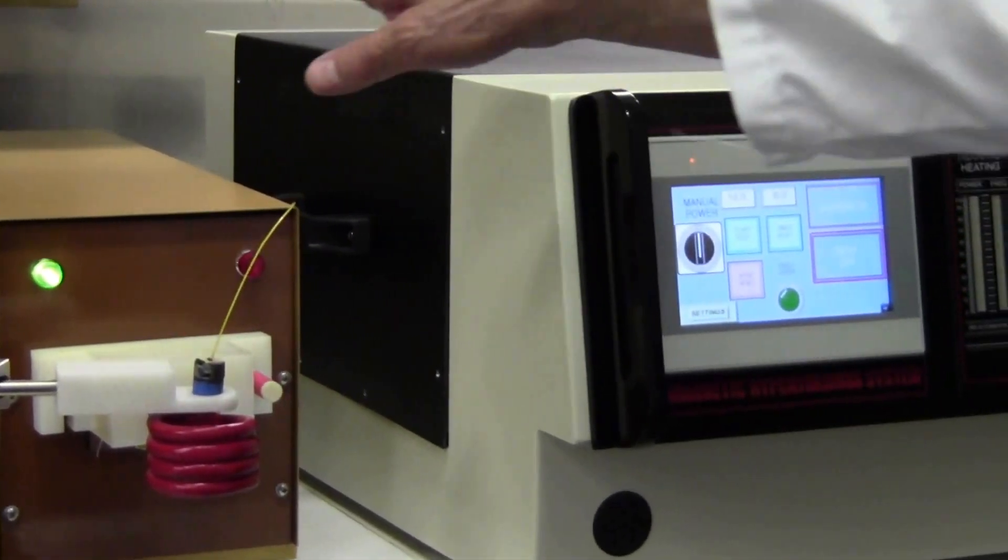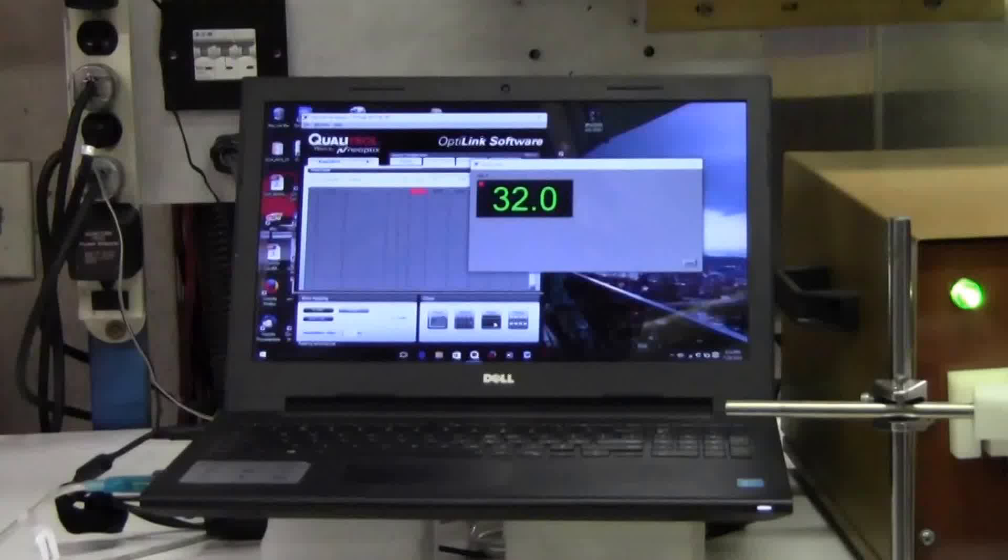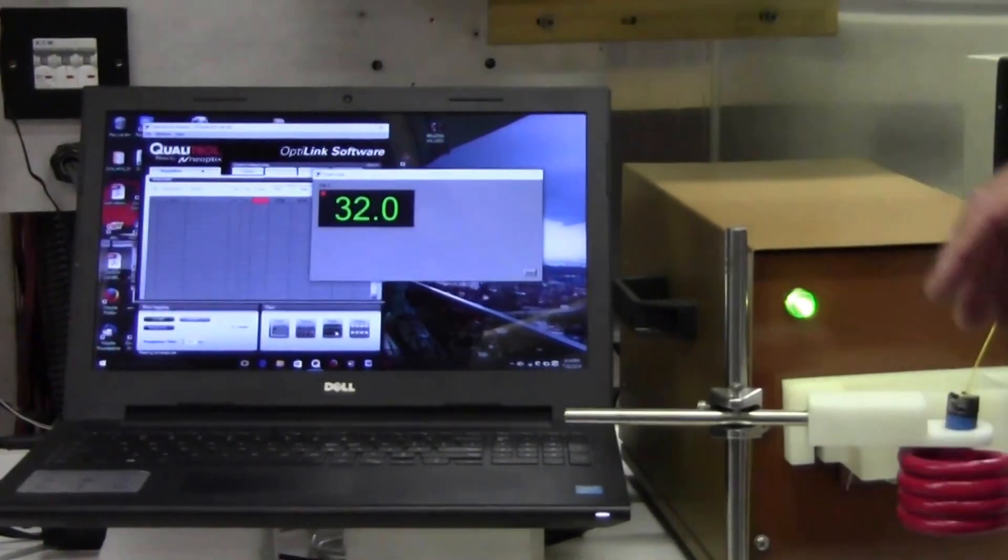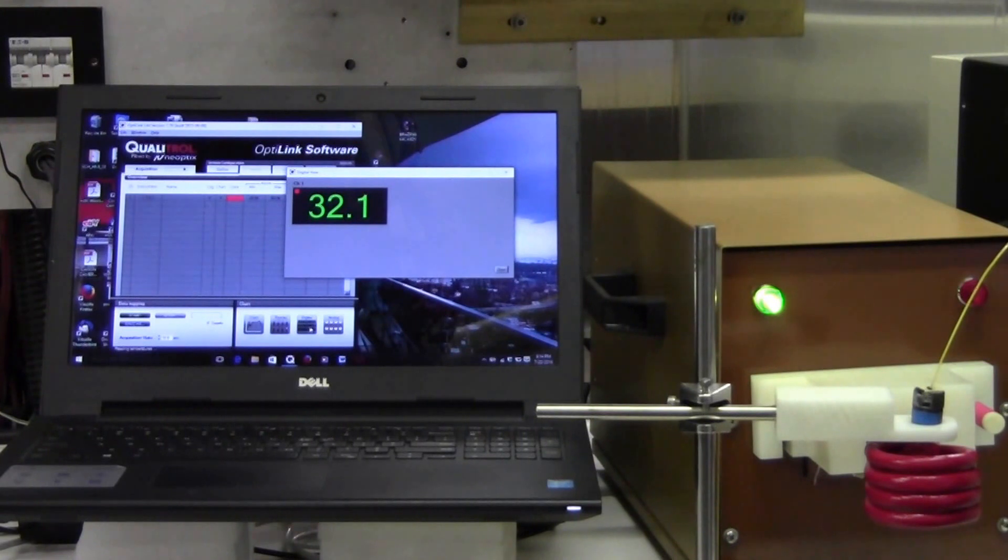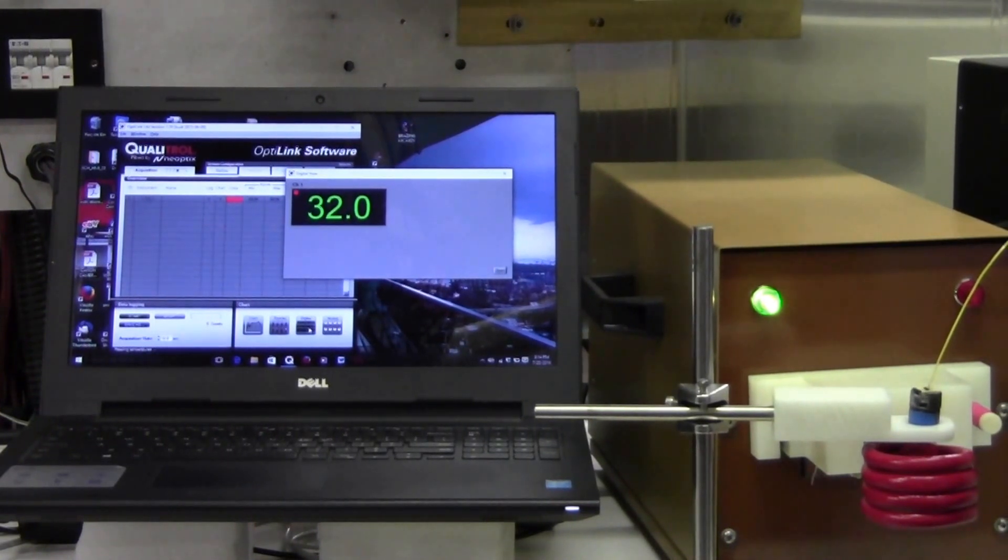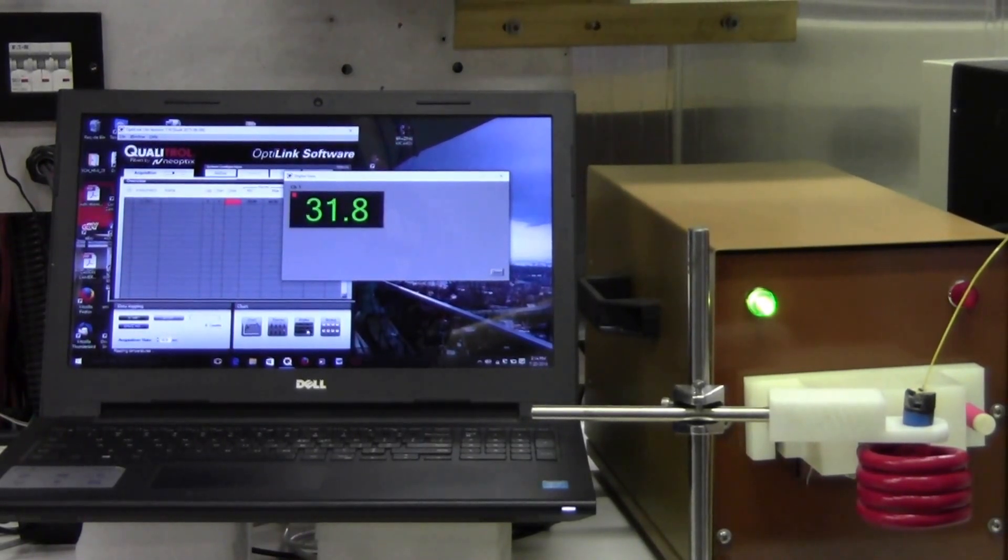Now if you scan over by the laptop computer, which is hooked up to the fiber optic temperature sensor, you can see we're currently at 32 degrees. If I step on the foot switch to heat again, you'll see the temperature start to rise.